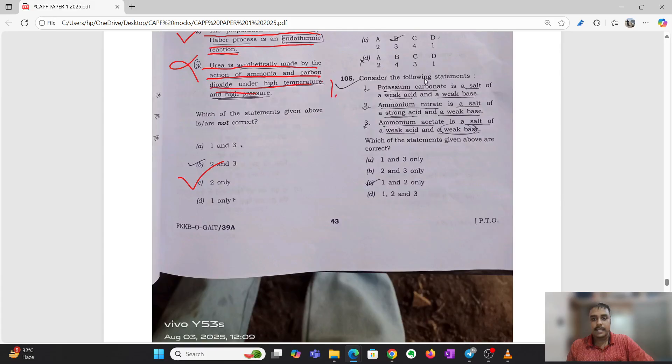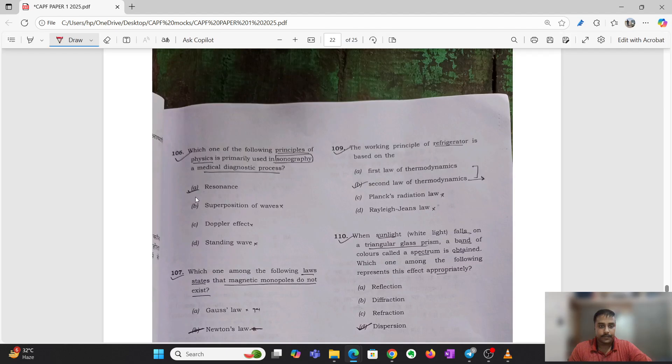Next, let's see: potassium carbonate is a salt of weak acid and weak base, this is wrong. Potassium carbonate is a strong base weak acid. Ammonium nitrate is a strong acid and strong base, this is right. Ammonium acetate is a salt of weak acid and weak base, this is right. So the answer would be 2 and 3, B is the answer. Question 106: which one of the following principles of physics is primarily used in sonography, a medical diagnostic process? That is Doppler's effect. Doppler's sonography where the sound wave is shown through, frequency shift to measure the speed of flow and direction.